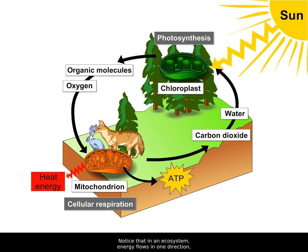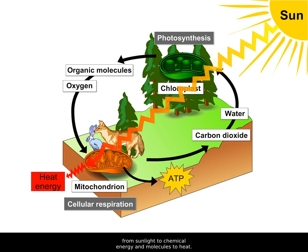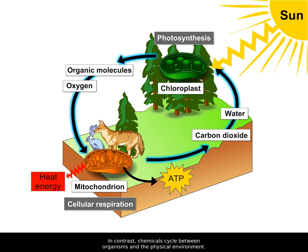Notice that in an ecosystem, energy flows in one direction, from sunlight to chemical energy and molecules to heat. In contrast, chemicals cycle between organisms and the physical environment.